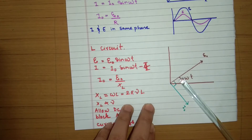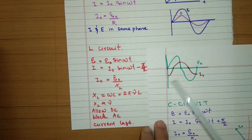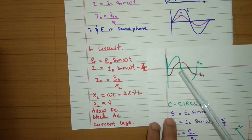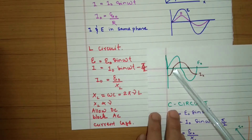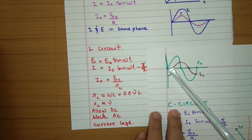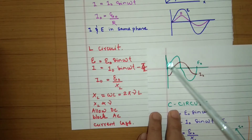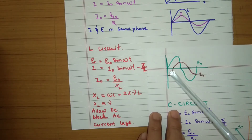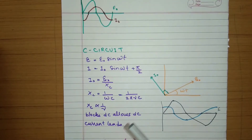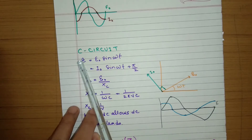In the phasor diagram for the L circuit, voltage is drawn at angle ωt and current is 90° behind it. In the graph, voltage leads, so when voltage is zero the current is negative — current starts 90° behind the voltage.